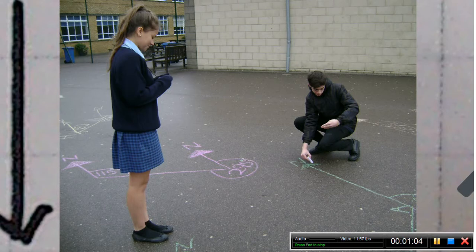Harry had to draw two crosses on the ground, and with Daisy's help, he then drew the north line from each of the crosses. They both stood on one of the crosses and Daisy used her compass to work out the bearing to get to Harry. Harry had to use his knowledge of angle facts to work out the bearing back to Daisy.